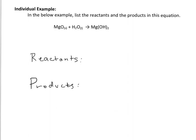As you might have guessed, once again, the reactants are going to be on the left side of our equation. And the products are on the right side of the arrow. So the reactants can be listed as MgO and H2O. And the product in this specific chemical equation is Mg(OH)2.